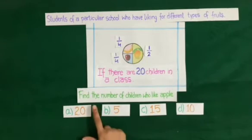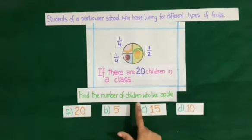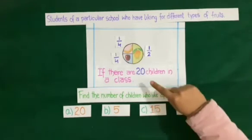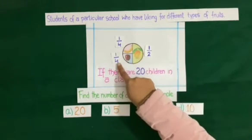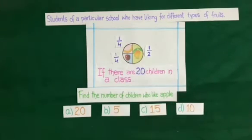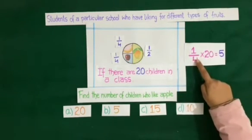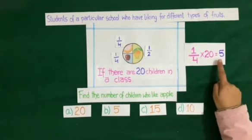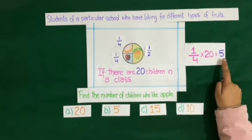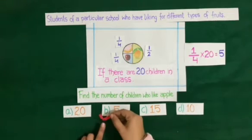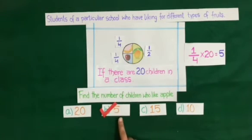Next question: find the number of children who like apple. Looking at apple in the pie chart, 1/4 of the children like apple. Representing it mathematically: 1/4 multiplied by 20 equals 5. So our correct answer is 5 — we will put a tick against B, which is 5.